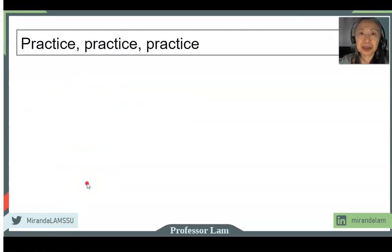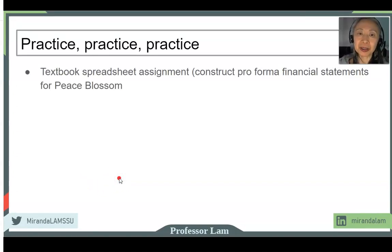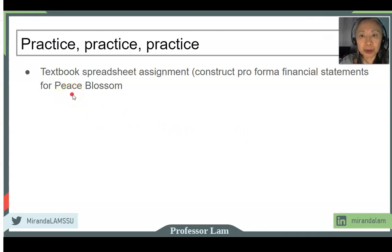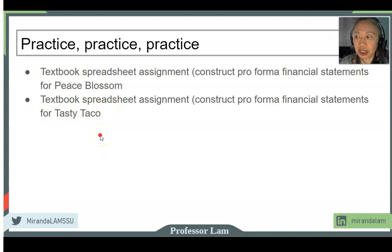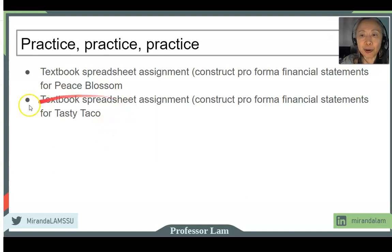The key to becoming good at financial modeling is practice, practice, practice. In this chapter, we're going to look at two statements: one for an existing business — Peace Blossom — and one for a new business, Tasty Taco. You'll complete assignments creating performance statements for each. This gives you a chance to see both approaches: one where you have historic information to draw upon, and one where you are starting fresh.